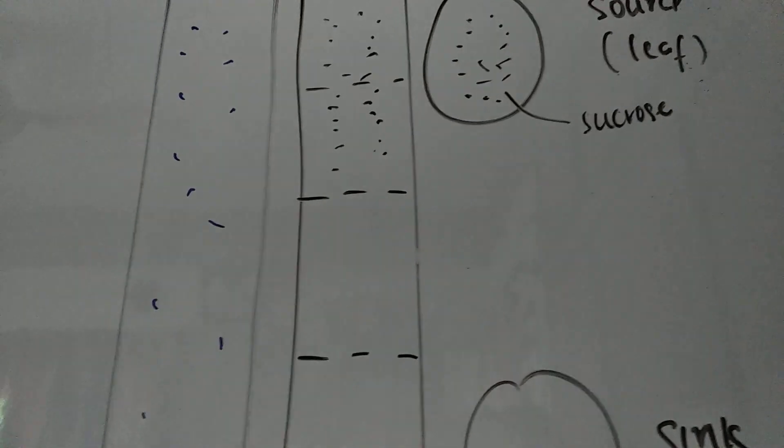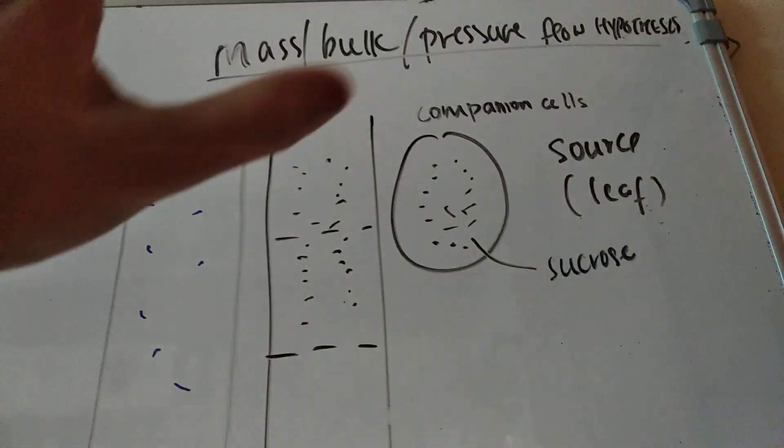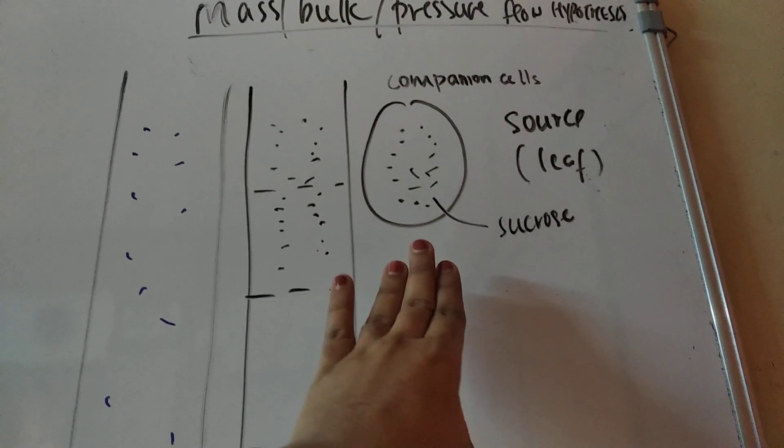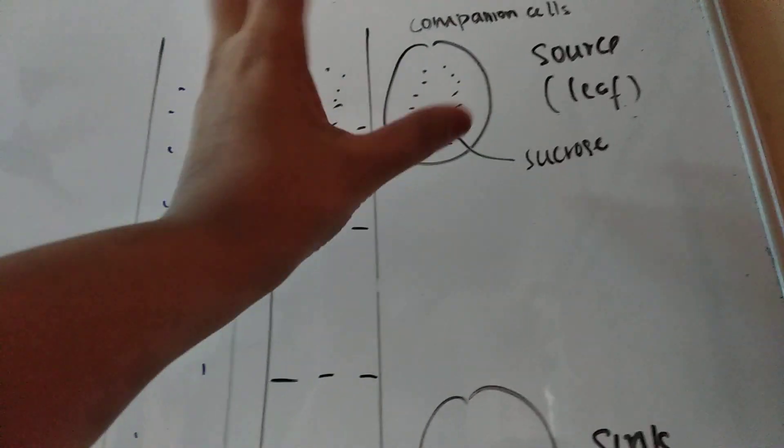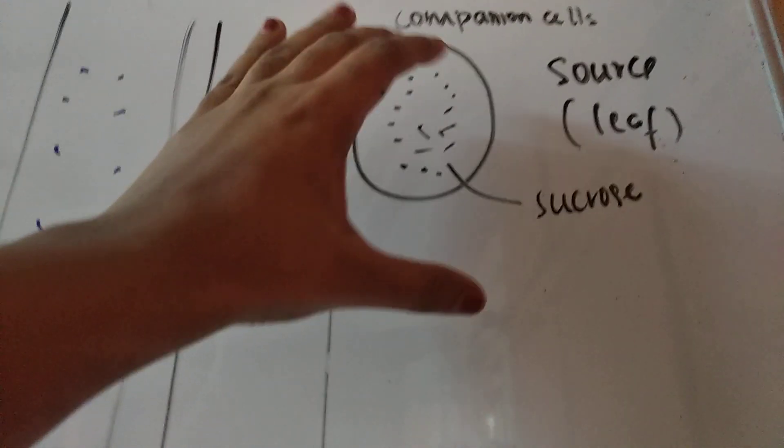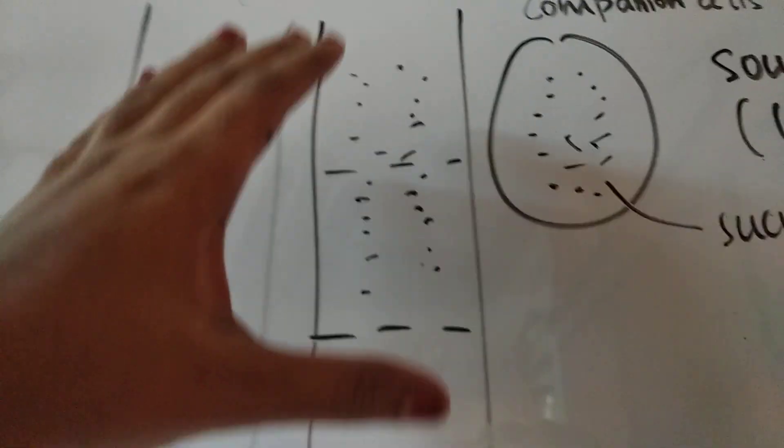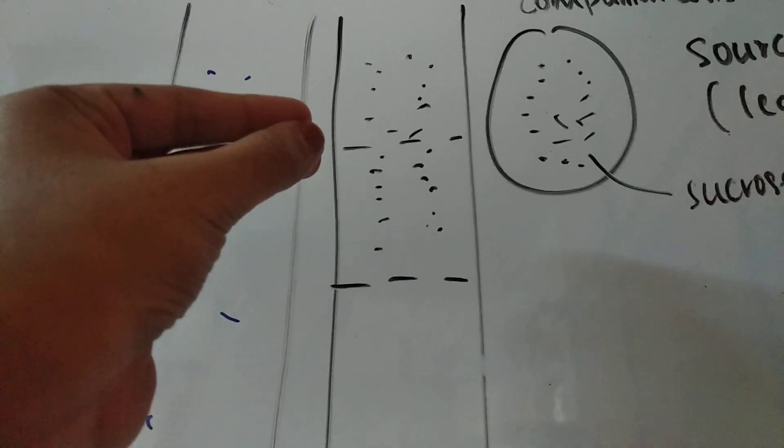That's why the concentration of sucrose in the phloem is slightly higher than the concentration of sucrose in the source cell or the companion cell. So even though this has the freshly synthesized sucrose, it is still the phloem that has more sucrose concentration.